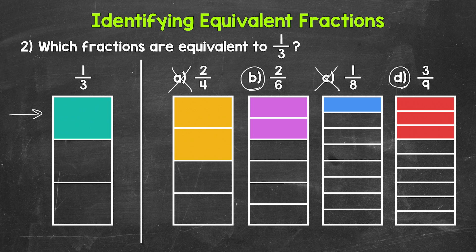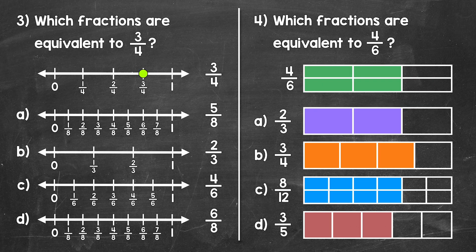Let's move on to our last two examples, numbers three and four. Taking a look at number three, where we have: which fractions are equivalent to three fourths? And here we're going to be working with number lines to help us out. Remember, equivalent fractions are going to be at the same place, the same position on a number line. So we have our number line with three fourths marked.